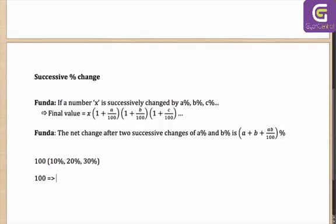Let's say you start with 100. A 10% change makes it 110. You add another 20% to it. Now this 20% is not of 100 but of 110. That means you add 22 to it, or it becomes 132.